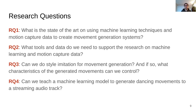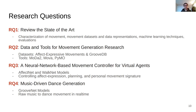We structure our thesis and this presentation along these four research questions. We present a state-of-the-art review of movement generation. We present two datasets that we have captured, aligned with a number of tools and libraries. We present AffectNet and WalkNet models, which allow controlling the expression of affect, planning, and personal movement signature. And we present GrooveNet, which provides music-driven dance generation in real-time.